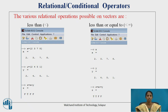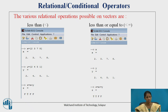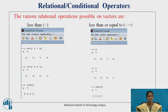Let's see the first relational operator, less than. Define two vectors: vector x as 2, 3, 7, 8 and vector y as 2, 4, 5, 1. The condition is z equals x less than y. It compares each corresponding element: 2 is less than 2 — false, 3 is less than 4 — true, 7 is less than 5 — false, 8 is less than 1 — false.